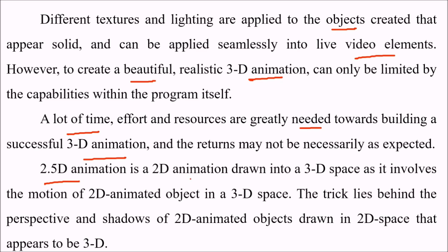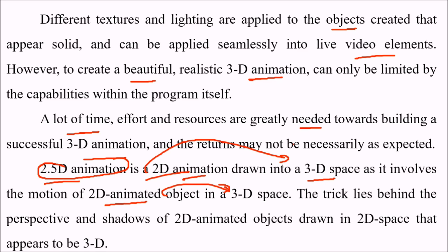2.5D animation is a 2D animation drawn into a 3D space, as it involves the motion of 2D animated objects in a 3D space. The trick lies behind the perspective and shadows of 2D animated objects drawn in a 2D space that appear to be 3D.